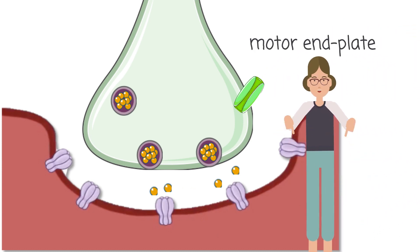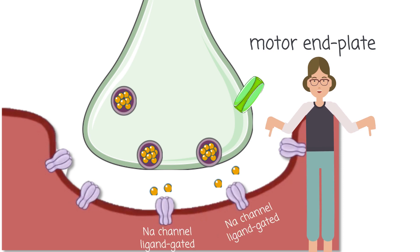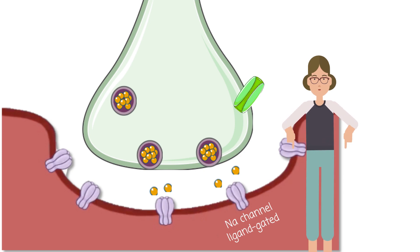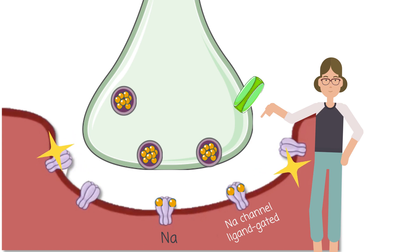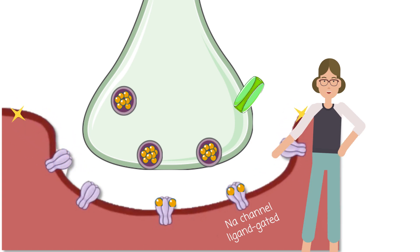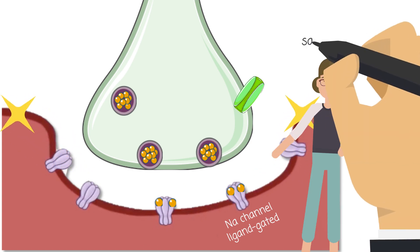In the membrane of the muscle fiber at the motor end plate, we have lots of ligand-gated sodium channels. These channels have receptors for acetylcholine, and attachment of two acetylcholines opens the channel. This causes the rush of sodium into the muscle fiber, which propagates the action potential in its membrane. The membrane of the muscle fiber is known as the sarcolemma.